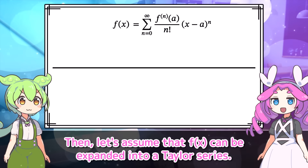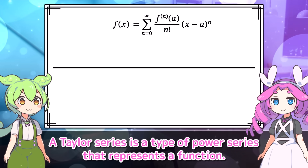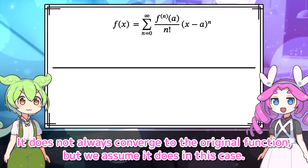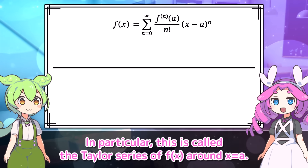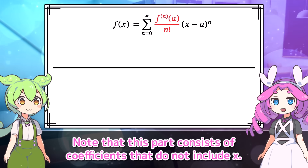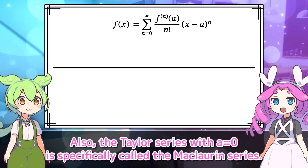Then let's assume that F of X can be expanded into a Taylor series. A Taylor series is a type of power series that represents a function. It does not always converge to the original function, but we assume it does in this case. In particular, this is called the Taylor series of F of X around X equals A. Note that this part consists of coefficients that do not include X. Also, the Taylor series with A equals zero is specifically called the Maclaurin series.